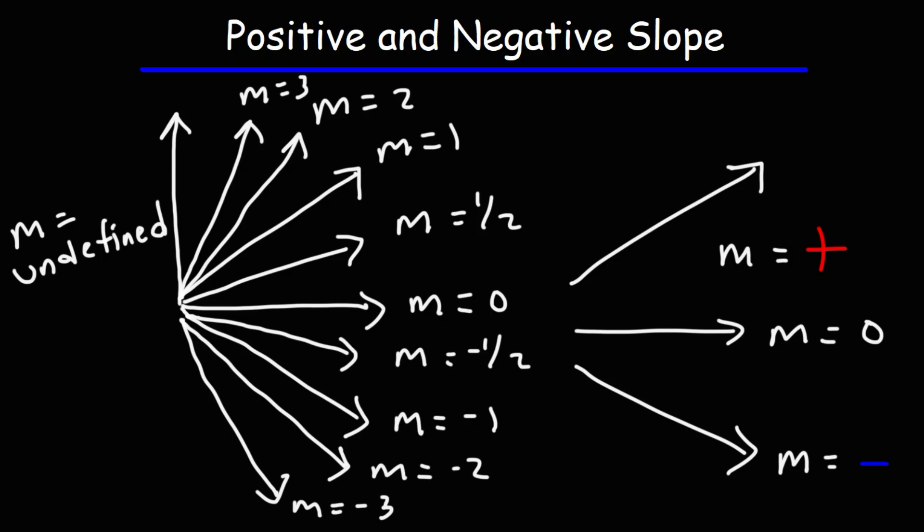So hopefully that gave you a good idea of the concept of positive and negative slope. Just to review, the slope is the change in y over the change in x. It's the vertical change divided by the horizontal change. If the vertical change is positive, the slope will be positive. If the vertical change is negative, the slope will be negative.